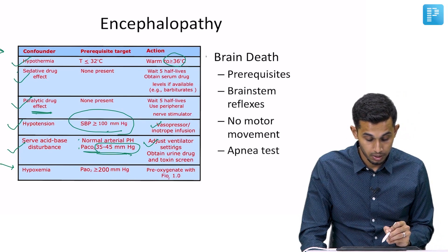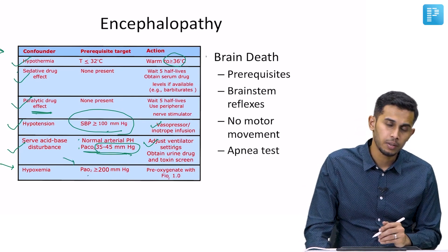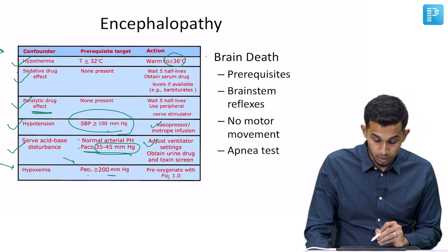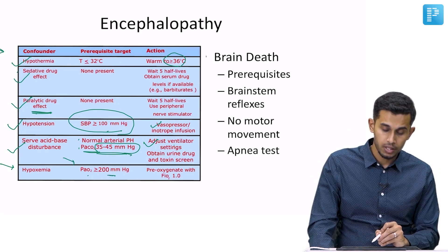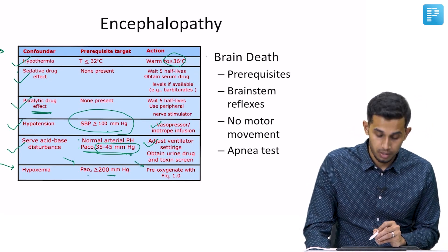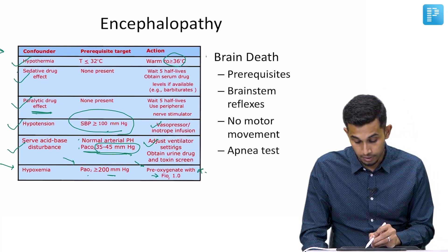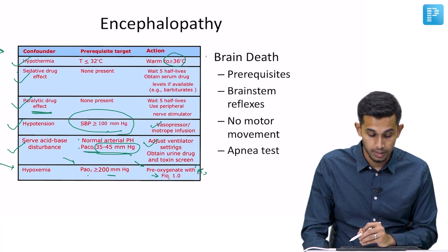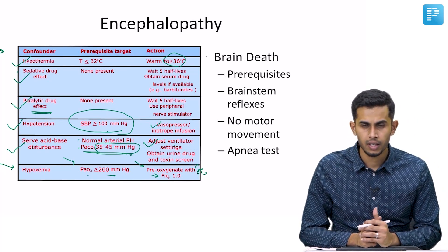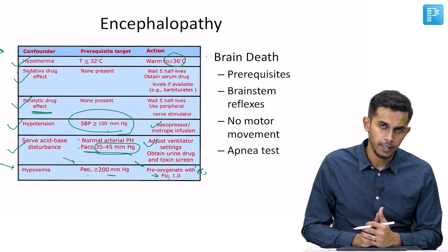Next is hypoxemia — it should not be present. We have to make sure that in the ABG, the PaO2 is more than 200 millimetres of mercury. This can be achieved by pre-oxygenating the patient with FiO2 of 1 on the ventilator. So we have to make sure no confounders are present before proceeding to diagnose the patient as brain dead.